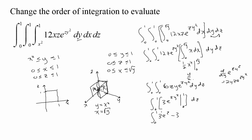We just integrate 3e^z minus 3 from 0 to 1 with respect to z. The antiderivative of e^z is e^z, so we get 3e^z minus 3z evaluated between 0 and 1. Plugging in 1 gives 3e minus 3, and plugging in 0 gives 3 times e^0 = 3 times 1 = 3, minus 3 times 0 = 0. So altogether the answer is 3e minus 6.